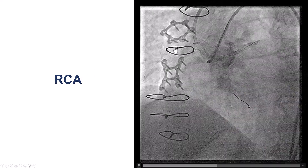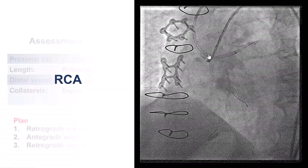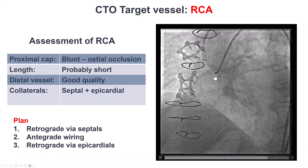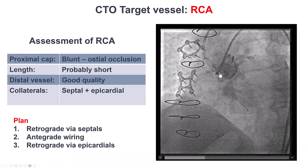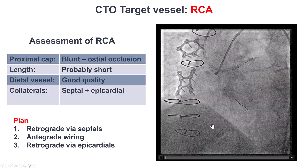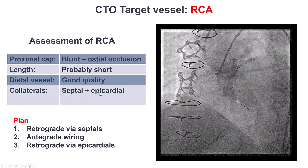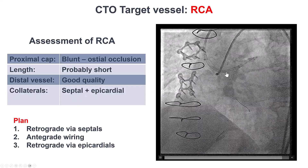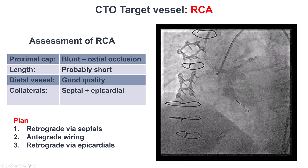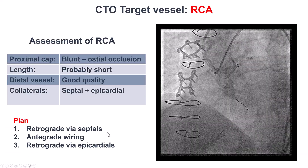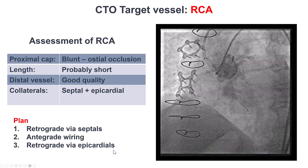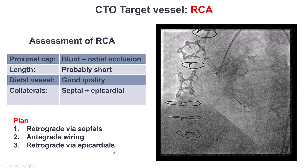The plan was to try to re-canalize the right coronary CTO. This had a blunt cap and is a flush orto-osteal occlusion. The length is unclear but probably short. Distal vessels seemed to be okay, and there were both septal and epicardial collaterals. Because of the osteal location of the occlusion, we decided to first try retrograde through septals, and if that didn't work, try antegrade wiring, leaving retrograde through epicardials as the last option.